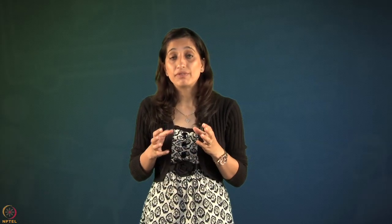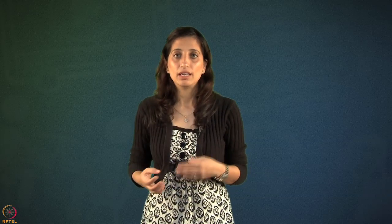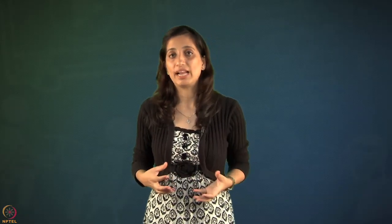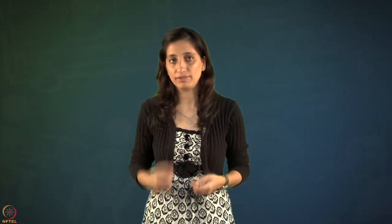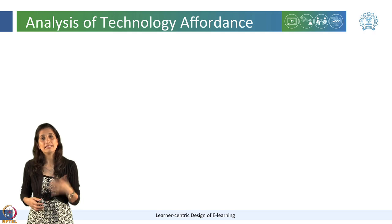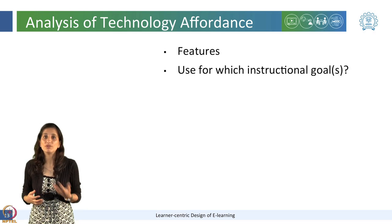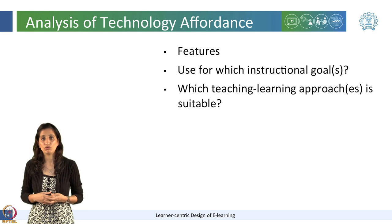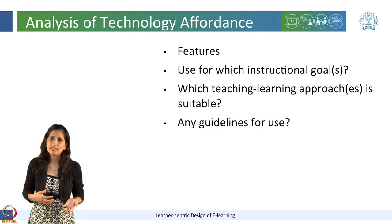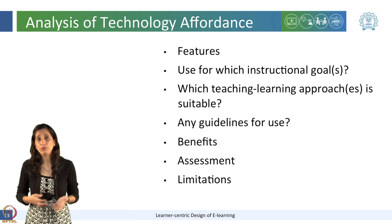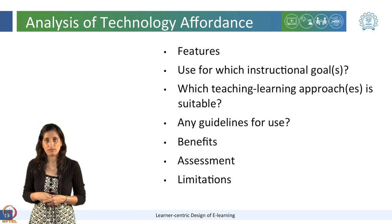However, it should start with clearly defining the learning outcomes and then exploiting the functionality and affordances of the technology tools to assess if the tool is able to best achieve those learning outcomes. There is a set of criteria which can be used to analyze technology affordances and if it best fits the purpose of the learning outcome. The analysis starts with listing down the features of the tool, understanding which instructional goals it serves, which teaching-learning approaches will be suitable, whether there are any guidelines to use the tool, the use of the tool in assessment, and any limitations.